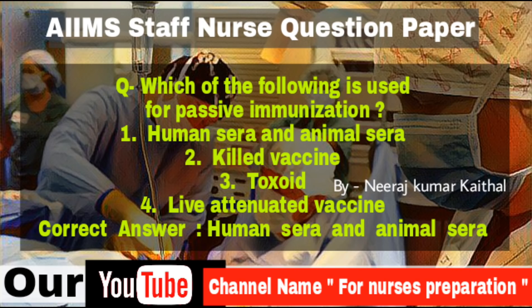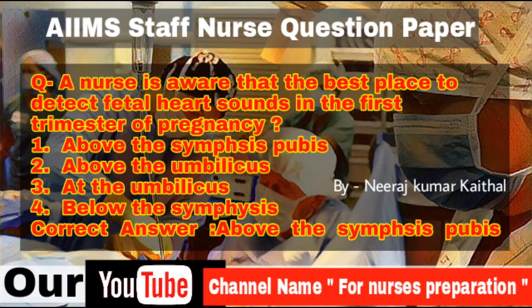Question: Which of the following is used for passive immunization? Options: Human sera and animal sera. The correct answer is human sera and animal sera. A related question: the uterine fundus after delivery is palpated above the symphysis pubis. Correct answer is above the symphysis pubis.